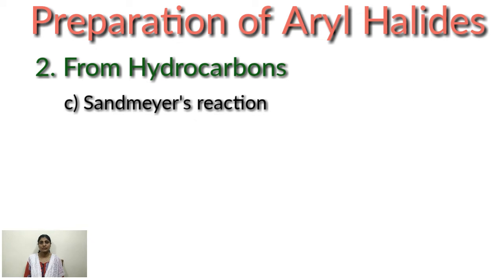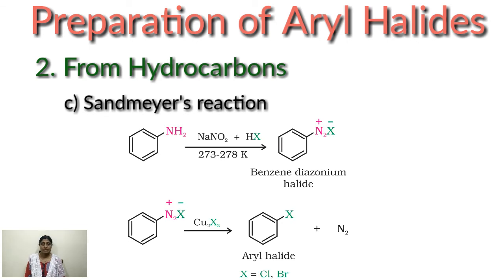Next one, a named reaction, Sandmeyer reaction. When a primary aromatic amine dissolved in cold aqueous mineral acid is treated with sodium nitrite, diazonium salt is formed. This freshly prepared diazonium salt is mixed with cuprous chloride or cuprous bromide, you will get the respective aryl halide. When treating with sodium nitrite plus HX, that is called nitrous acid, you are getting nitrous acid by mixing sodium nitrite plus HX at a particular temperature. The temperature given as 278 Kelvin. You are getting benzene diazonium halide. These freshly prepared benzene diazonium halides are treated with cuprous halide. You are getting aryl halide plus nitrogen, where HX may be chlorine or bromine.